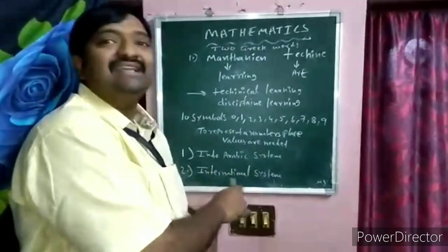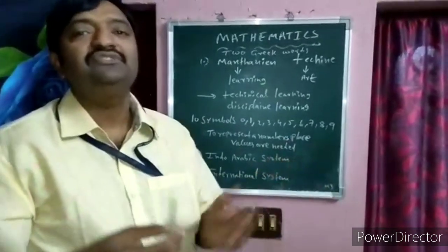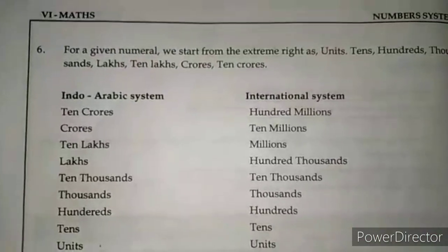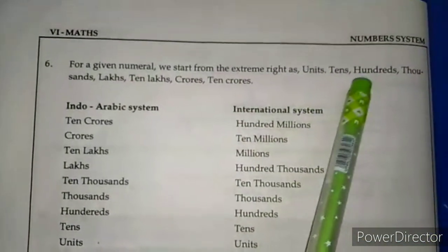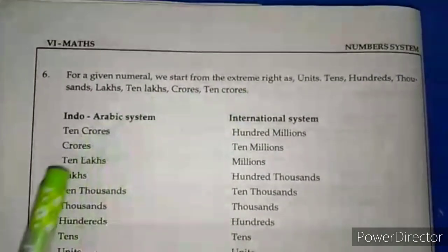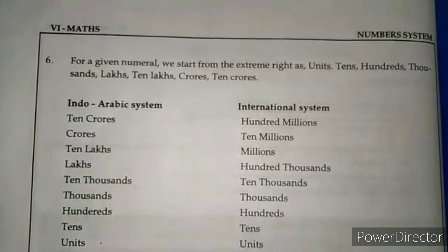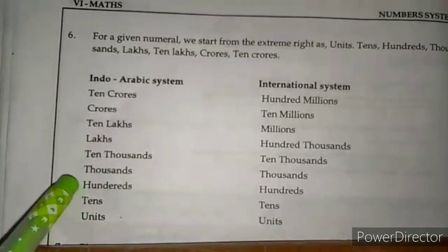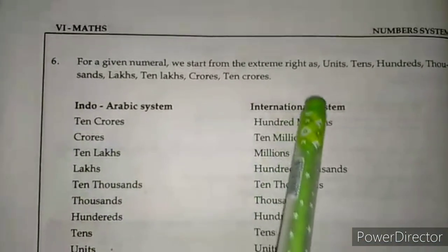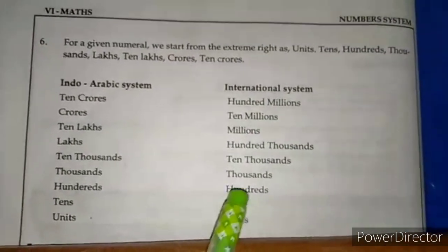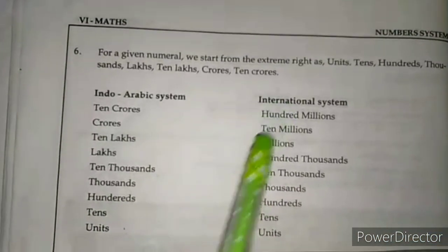There are two types of place value systems: the Indian Arabic system and the International system. In the Indian Arabic system, starting from the extreme right, we have: units, tens, hundreds, thousands, ten thousands, lakhs, ten lakhs, crores. In the International system: units, tens, hundreds, thousands, ten thousands, hundred thousands, millions, ten millions, hundred millions.